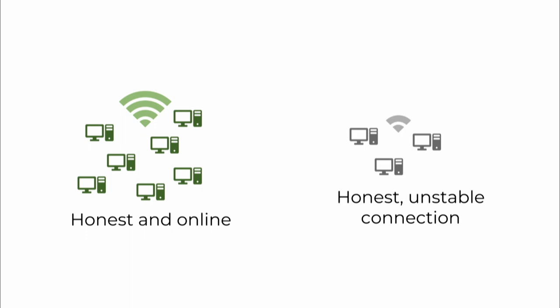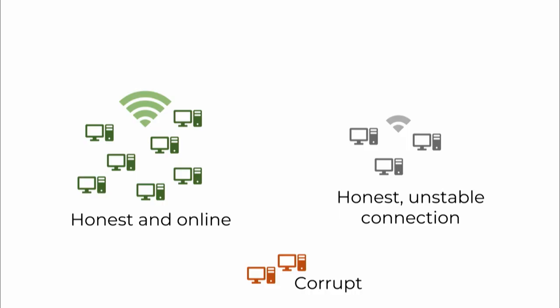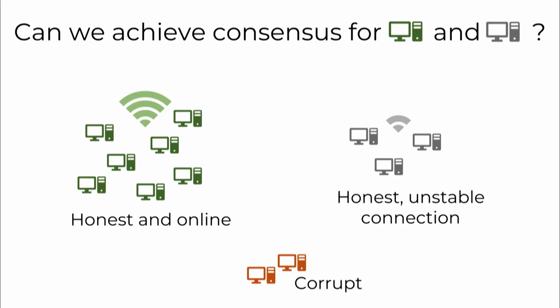What we will try to do is quantify exactly how synchronous the network is and how partition tolerant the protocol is, and we will need a new model to do this. Imagine there's a set of green nodes — nodes that are both honest, online, and have a good network connection, all able to talk to each other within a single round. And then we have gray nodes — honest people with an unstable network connection. We want to make sure both the green and gray nodes can reach consensus. Of course when the gray nodes are offline they cannot make progress, but whenever they come back online they should continue to make progress and should always have consistency.